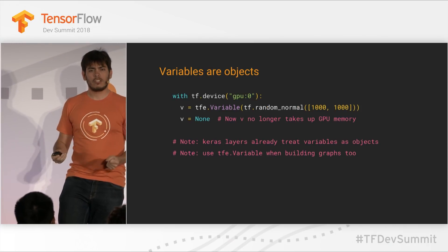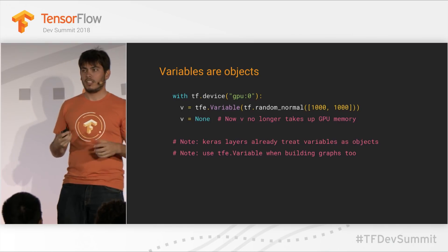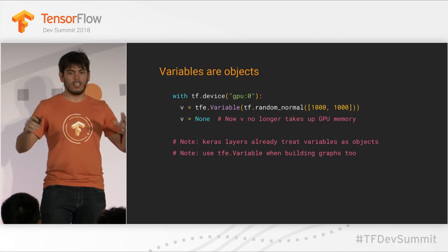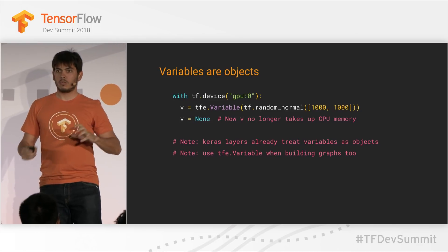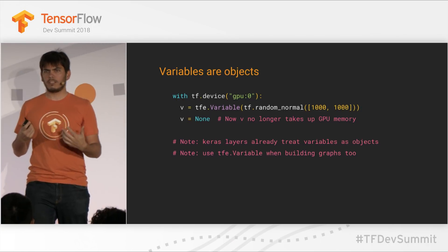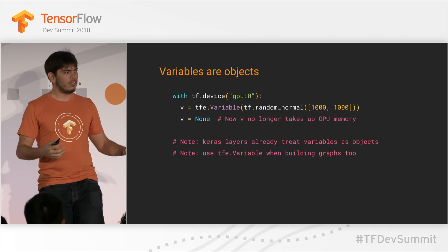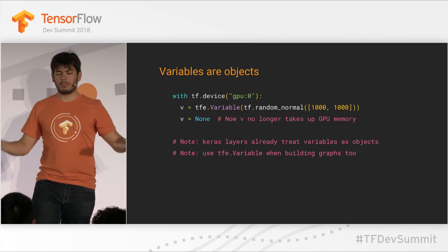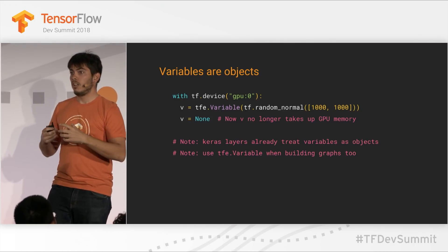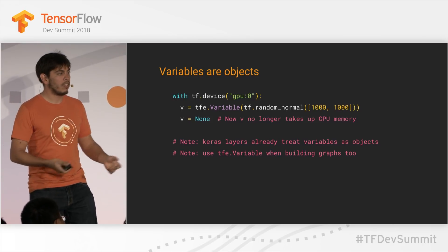A big change when programming with eager versus graph is that we're making everything as Pythonic and object-oriented as possible. Variables in TensorFlow are usually a complicated thing, but when eager execution is enabled it's much simpler. A TensorFlow variable is just a Python object — you create one, you have it. You can change its value, read its value. When the last reference to it goes away, you get your memory back, even GPU memory. If you want to share variables, you just reuse those objects — no variable scopes or other complicated structures.